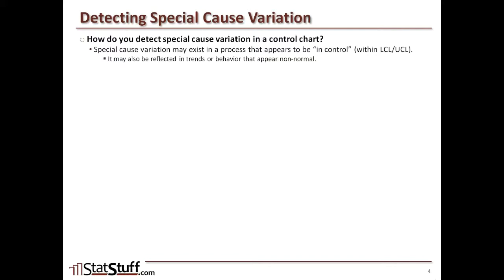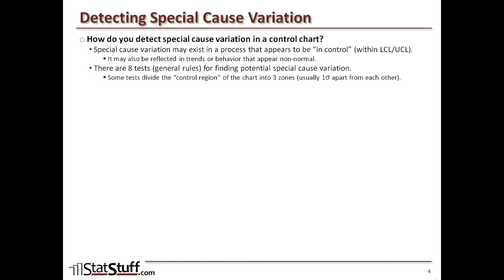Special cause variation may also be reflected in trends or behavior that appear non-normal. It's not always something that falls outside of control; it could be other types of behaviors we're looking for. We have eight different tests or general rules embedded in Minitab used for finding potential special cause variation.